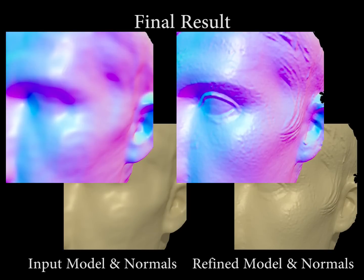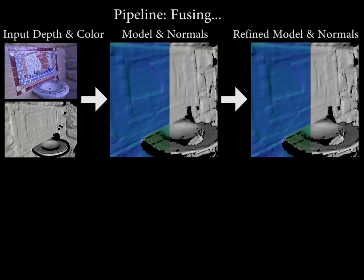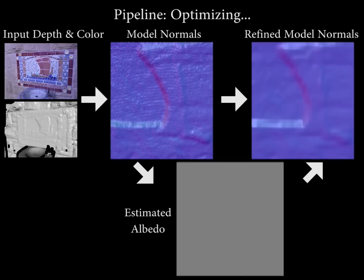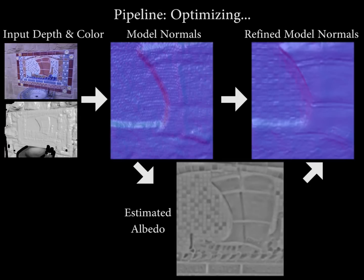Our method takes RGBD data as input and first obtains an initial truncated signed-distance field model. Once integration is finished, we jointly optimize for surface reflectance and the refined geometry. Note that we use a hierarchy to aid the optimization.